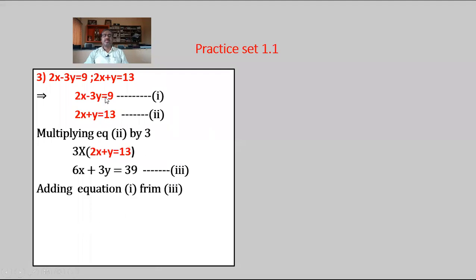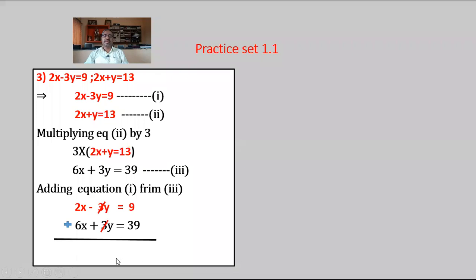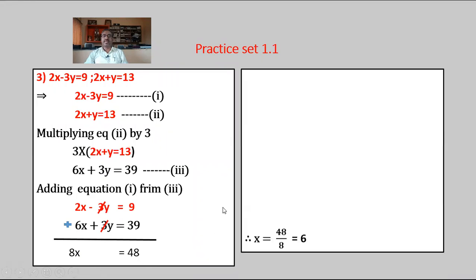From equations 1 and 3, the coefficients of y are minus 3 and plus 3 — opposite signs — so add equations 1 and 3. We get 2x minus 3y equals 9, plus 6x plus 3y equals 39. Then minus 3y plus 3y gets 0, and 2x plus 6x equals 8x equals 9 plus 39 equals 48. So x equals 48 upon 8 equals 6.